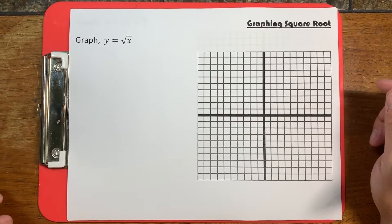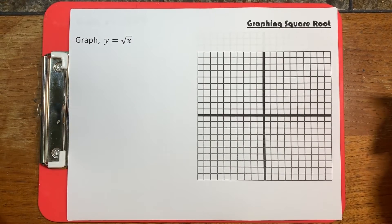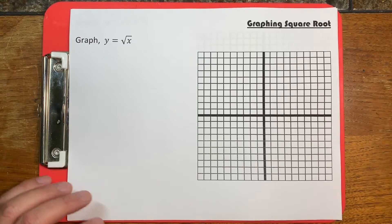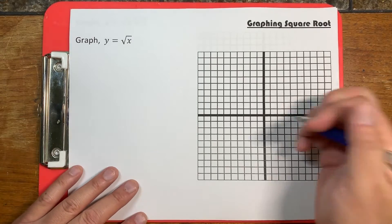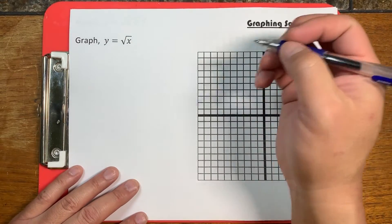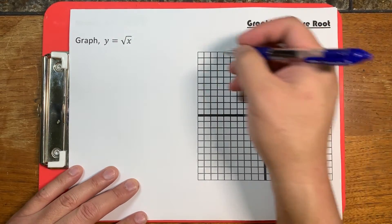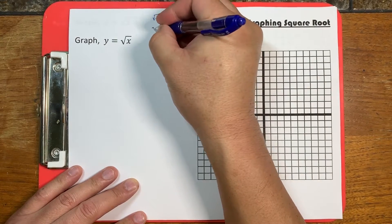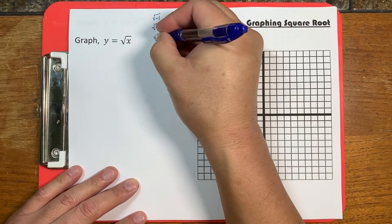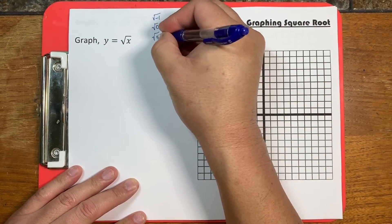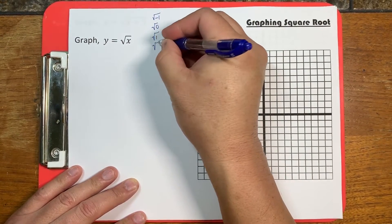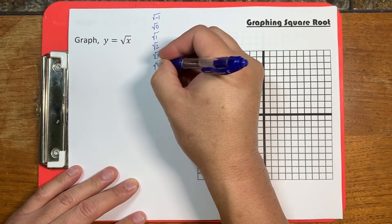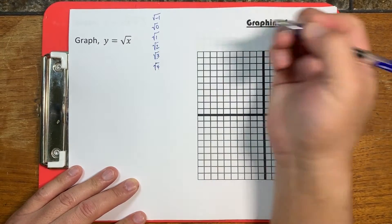What we're working on in this video is how to graph square roots. Now let's think about square roots. If we just look at some random square roots — the square root of negative 1, of 0, of 1, 2, 3, and 4.